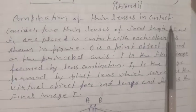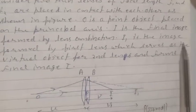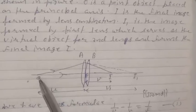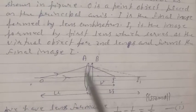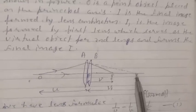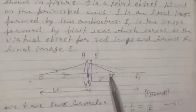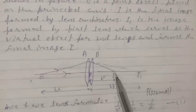Combination of thin lenses in contact: Consider two thin lenses of focal length F1 and F2 placed in contact with each other. O is a point object placed on the principal axis. I is the final image formed by the lens combination. I1 is the image formed by the first lens, which serves as the virtual object for the second lens, which then forms the final image I.